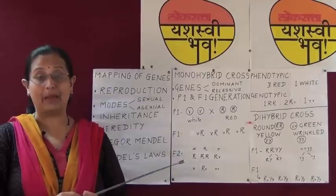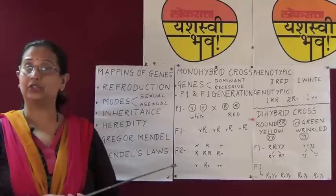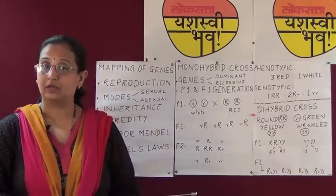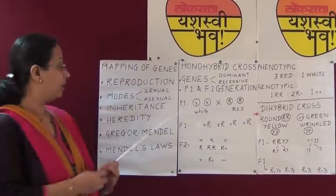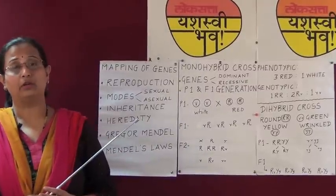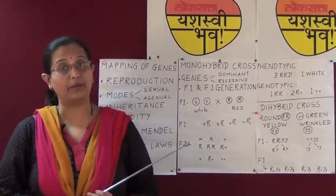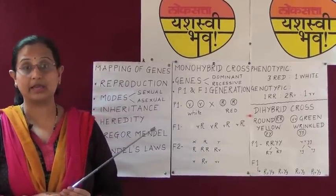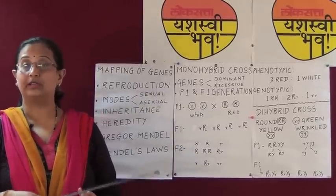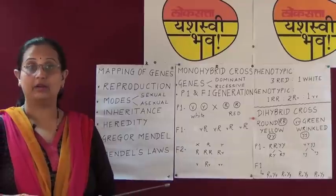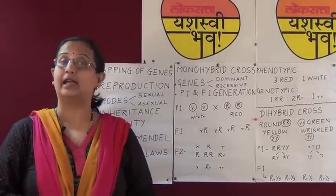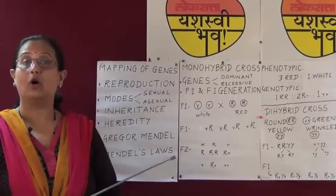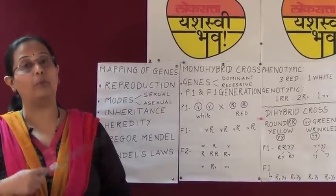In this chapter on mapping of genes, we are going to study about how variation gets formed and how it gets transmitted from one generation to the other — this is called inheritance. Students, all of you would have noticed that most of us resemble our parents in physical or mental characteristics. We say things like 'he looks like his father' or 'she is tall like her mother.' These characteristics that get transmitted from parents to offspring is called heredity.